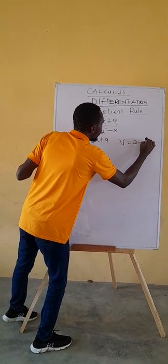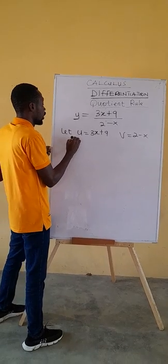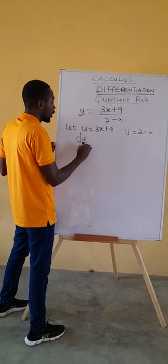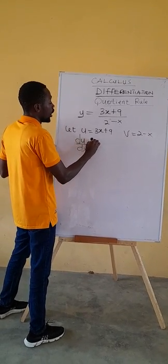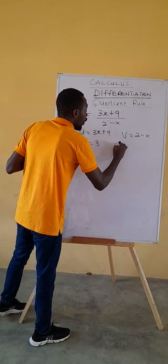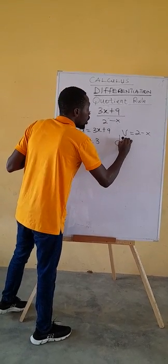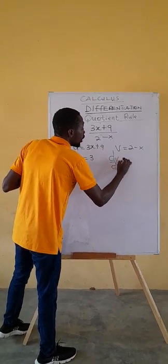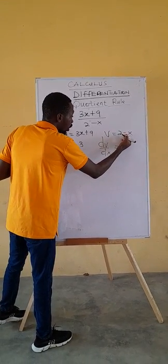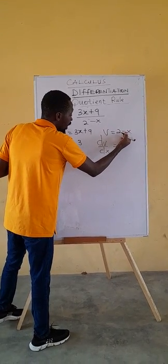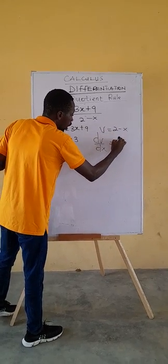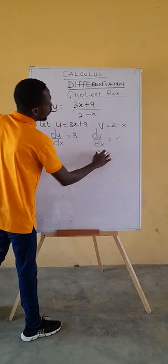the denominator, 2 minus x. So we differentiate u: du/dx. The differential of a linear term is the coefficient of the variable, so du/dx equals 3. Then dv/dx: the differential of 2 minus x gives us minus 1.